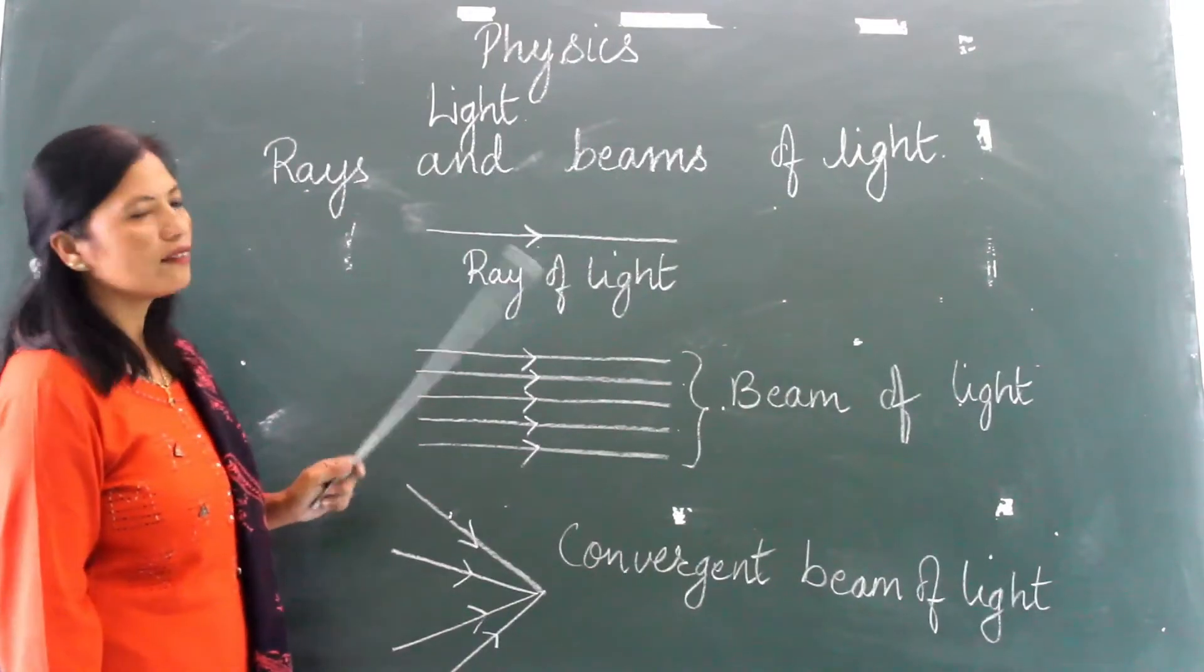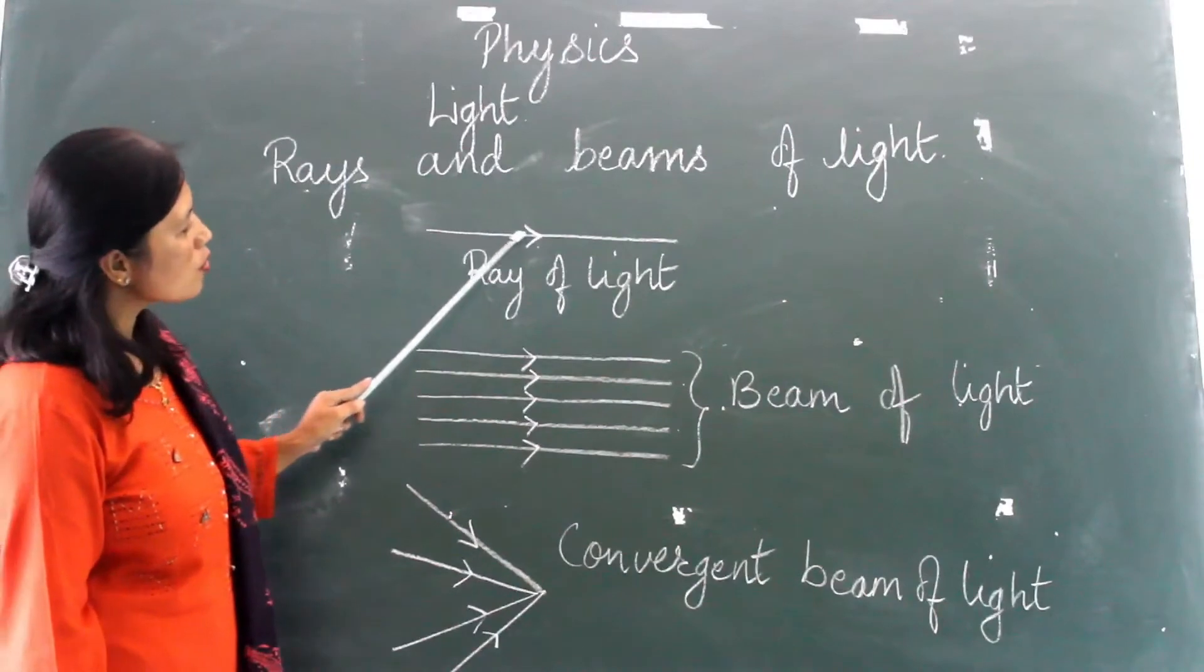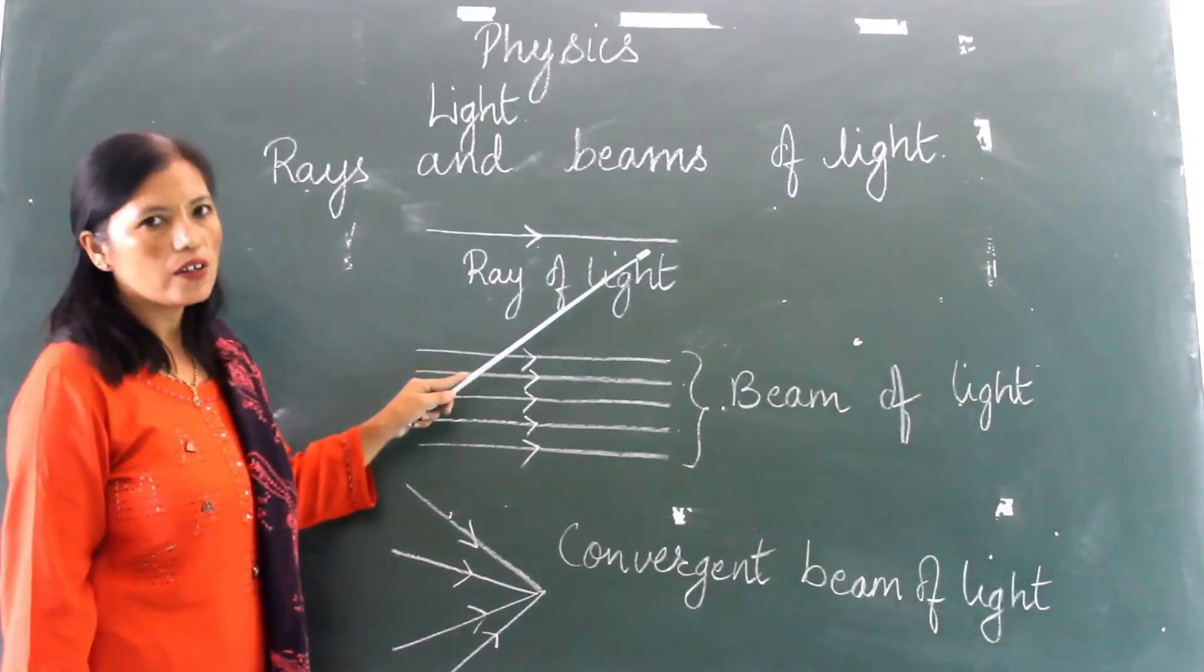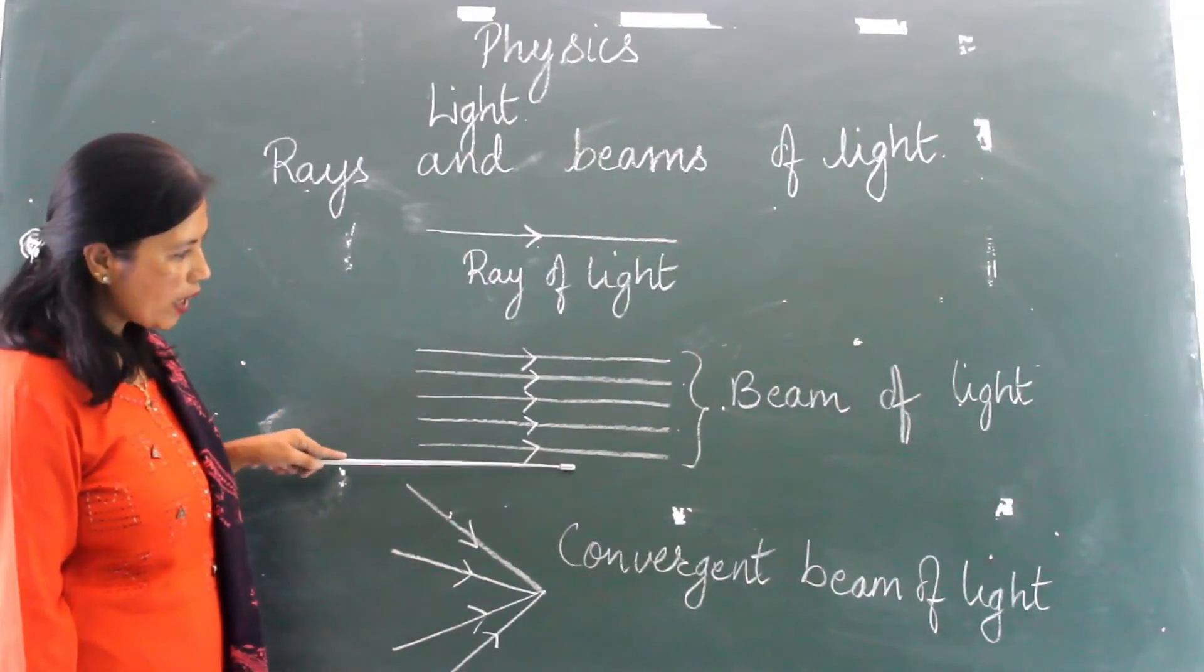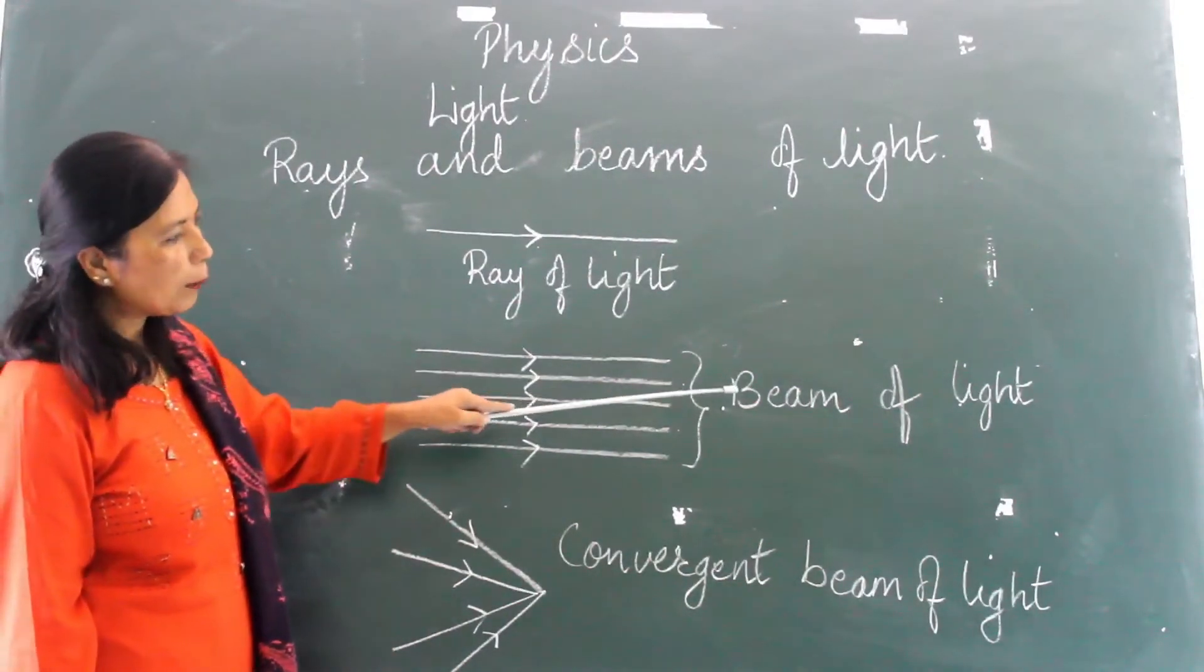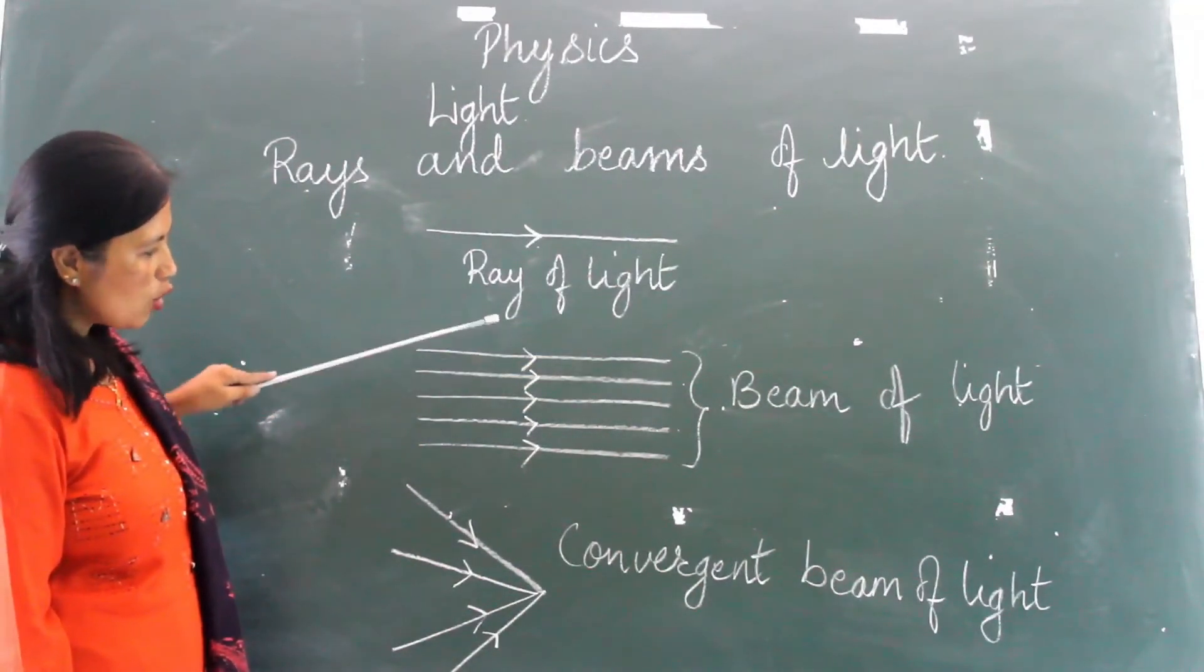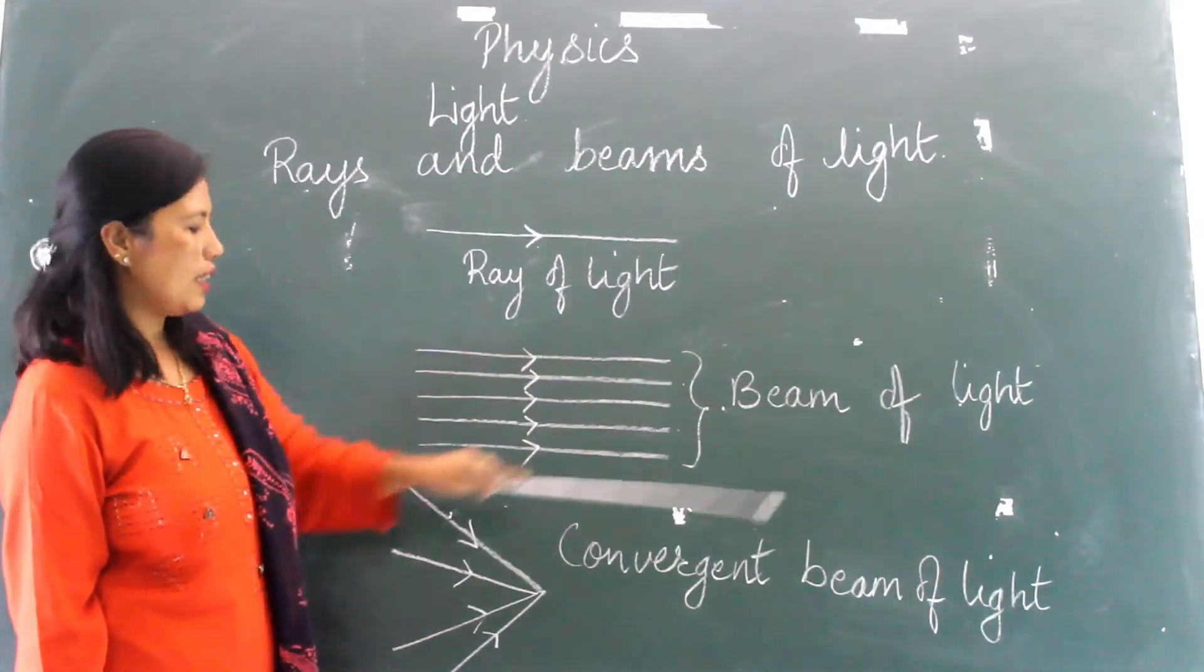We all know that light travels in a straight line. A thin or narrow path of light—when you have more than one ray, it is known as a beam of light. Here, they are parallel to each other. So this is also known as a parallel beam of light.